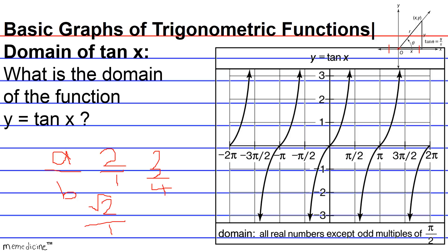So the domain of the tangent of x is all real numbers except odd multiples of π/2 — which in degrees is 90 degrees. So odd multiples of 90 degrees, or odd multiples of π/2. Thanks for tuning in.